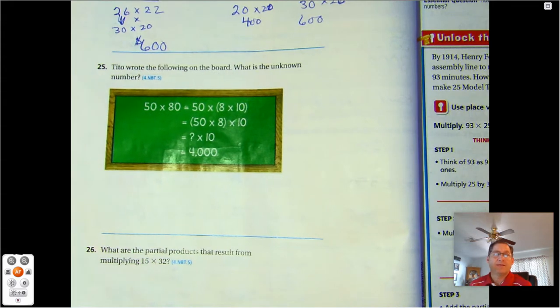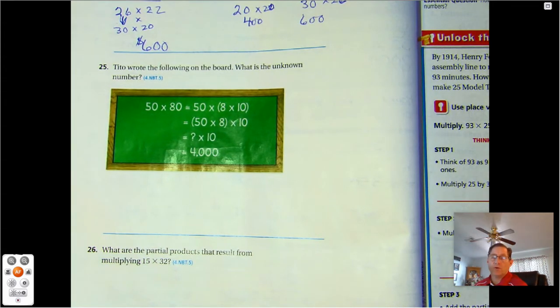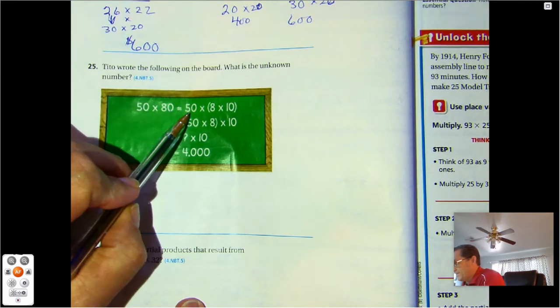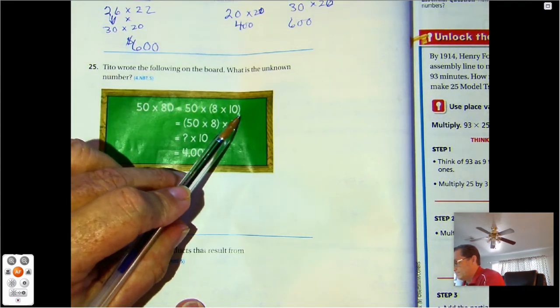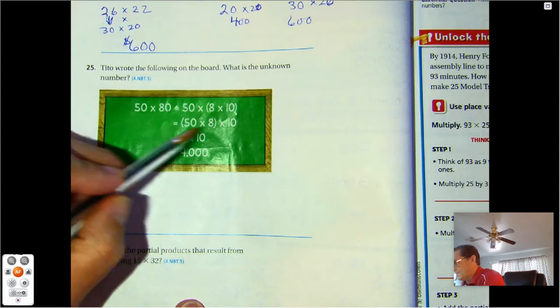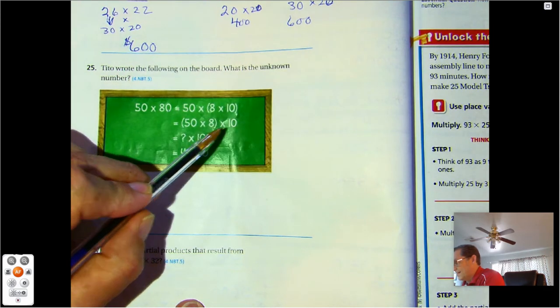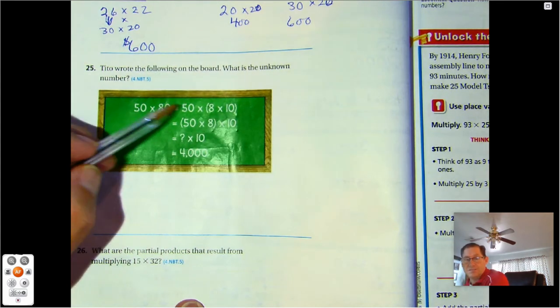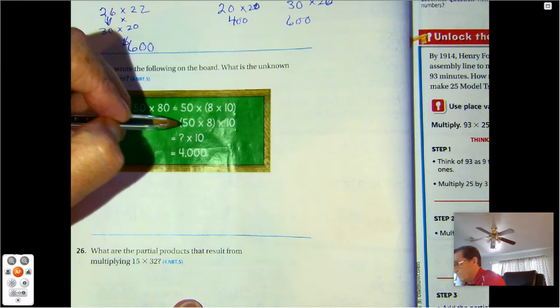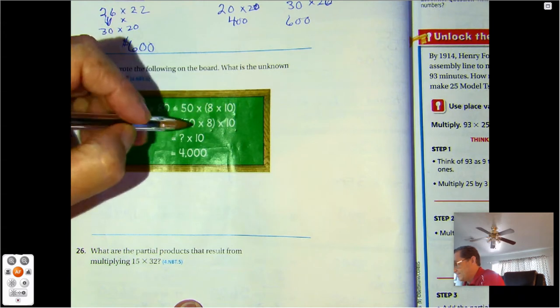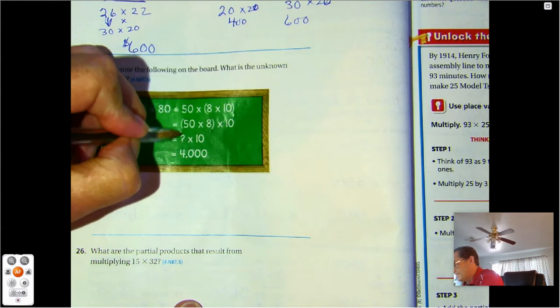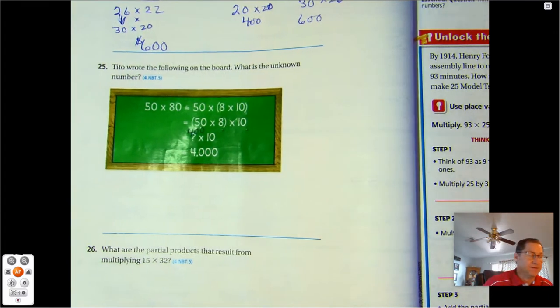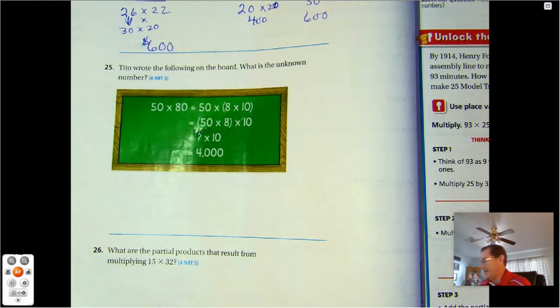Number 25. Tito wrote the following on the board. What is the unknown number? 50 times 80 is the same as 50 times 8 times 10. So he's using the associative property. 50 times 8. 5 times 8 is 40, put the 0 from the 50. So our missing number is 400.